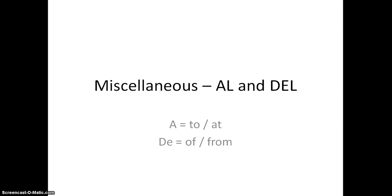We're going to have a look at a miscellaneous use of grammar in Spanish, where we use AL and DEL. A generally means TO or AT, and DE generally means FROM or OF. So when does it become AL and DEL?